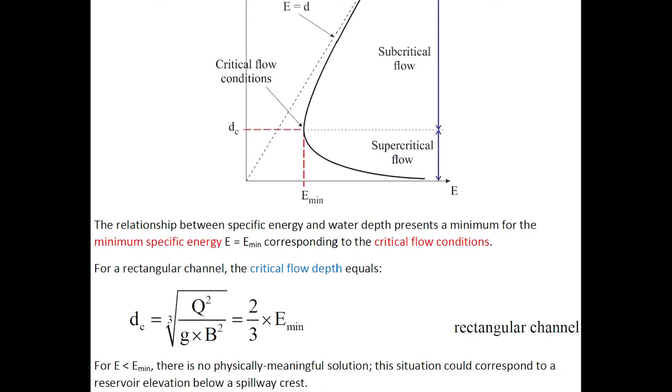The relationship between the specific energy and water depth presents a minimum for the minimum specific energy E_min, corresponding to critical flow conditions. For a rectangular channel, the critical flow depth is equal to two-thirds of the minimum specific energy.